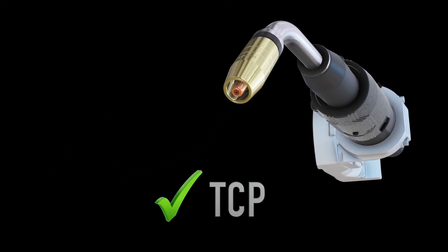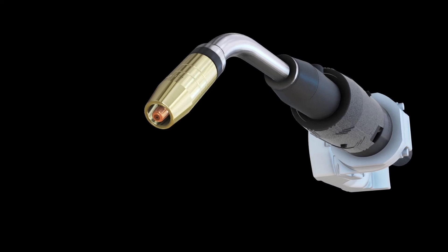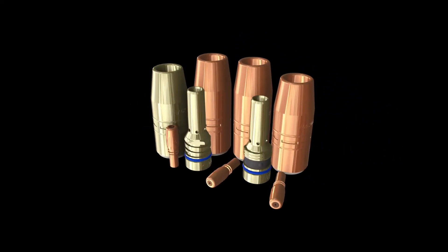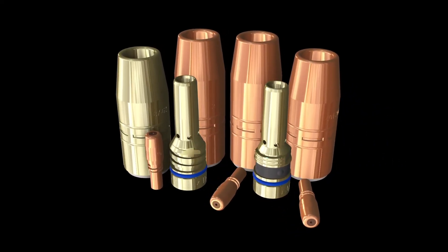You can also continue to use your existing Tregaskiss nozzles and quick-load liners. Converting to the new AccuLock R system couldn't be simpler.